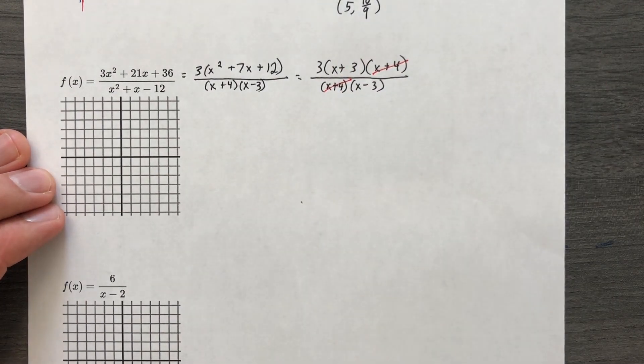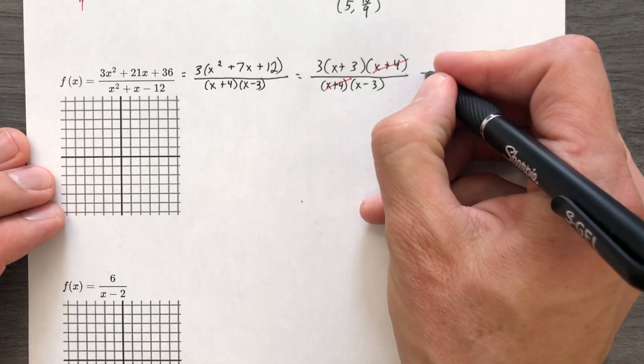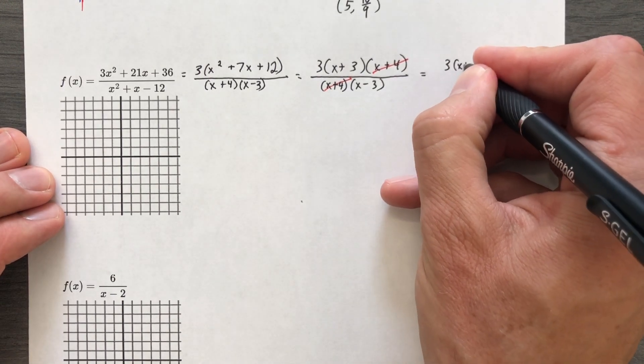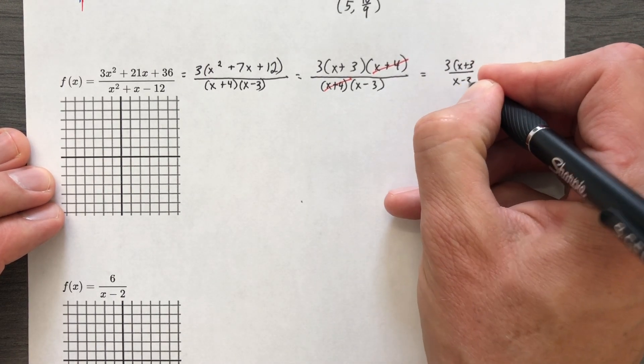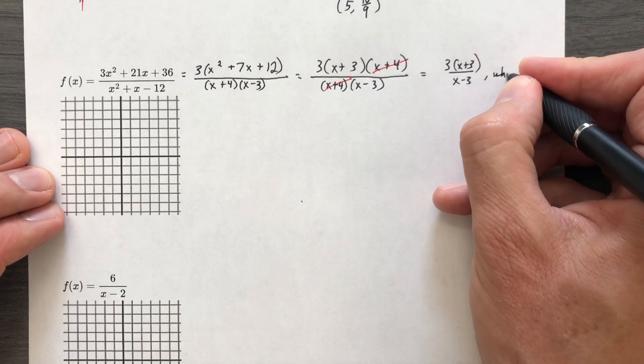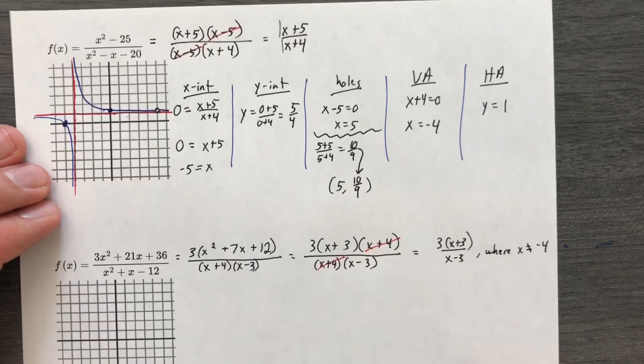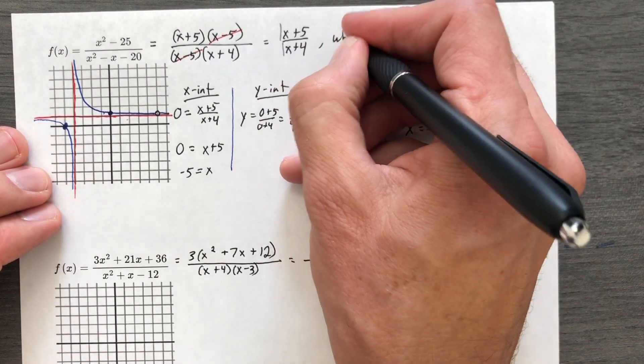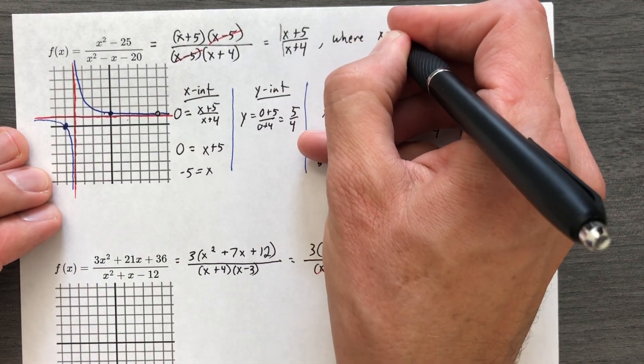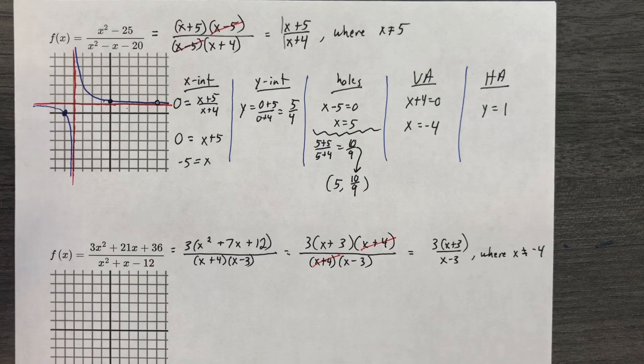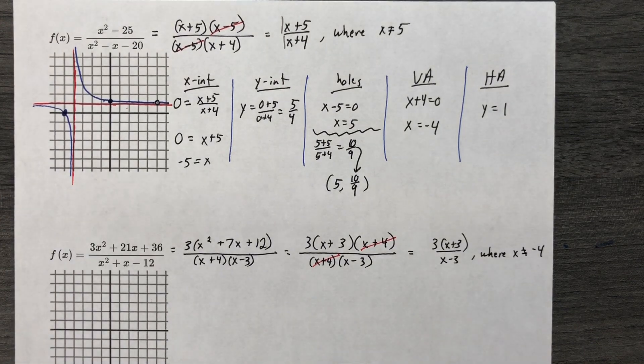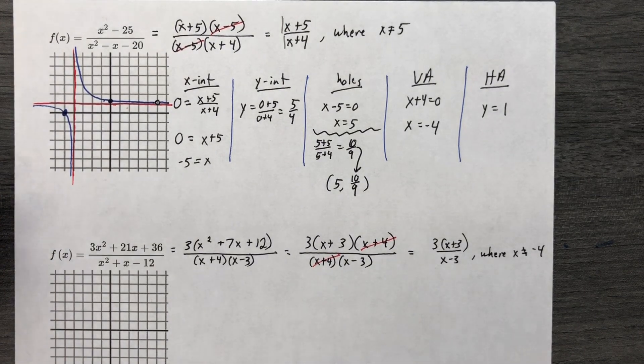Okay, we have canceled those. We are ready. 3, and then x plus 3 over x minus 3. If you want to get a little crazy with it, you could say this is true where x is not equal to negative 4. Could have done that on the last one. That's fine, but only as long as x is not equal to 5. You don't have to put that. I mean, you can, but let's not get too picky.